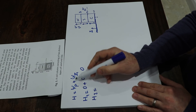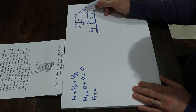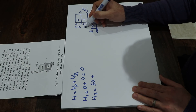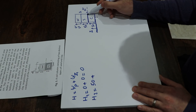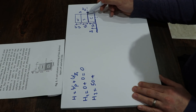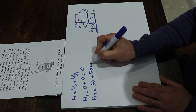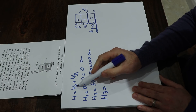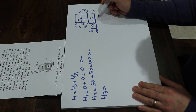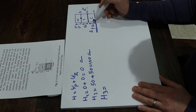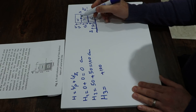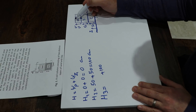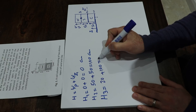H2 equals psi_p plus psi_z. At point two, the pressure potential psi_p is 50 centimeters as given, and the gravitational head psi_z is 50 centimeters since point two is 50 centimeters above the reference level, so h2 equals 50 plus 50 equals 100 centimeters. H3 equals psi_p plus psi_z. The gravitational head at point three is 100 centimeters, and the pressure potential is 20 centimeters — the vertical distance to the free water surface — giving h3 equals 120 centimeters.